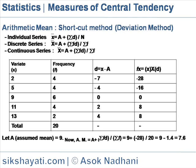For individual series, the average is x̄ = a + Σd / n. For discrete series, average x̄ = a + Σfd / Σf. For continuous series also, x̄ = a + Σfd / Σf. Where a is the assumed mean, Σd is the sum of the deviations from the assumed mean, and Σfd is the sum of products of deviations from the assumed mean and their corresponding frequencies.